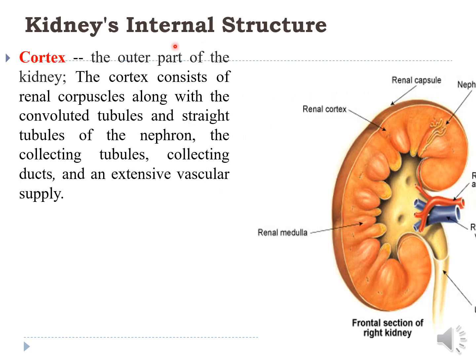The internal structure: the outer part of the kidney is the cortex, a reddish-brown area. It consists of renal corpuscles along with convoluted tubules, straight tubules of the nephron, collecting ducts, collecting tubules, and an extensive vascular supply. The outer area of the cortex lies just beneath the renal capsule, adjacent to the renal pyramids.